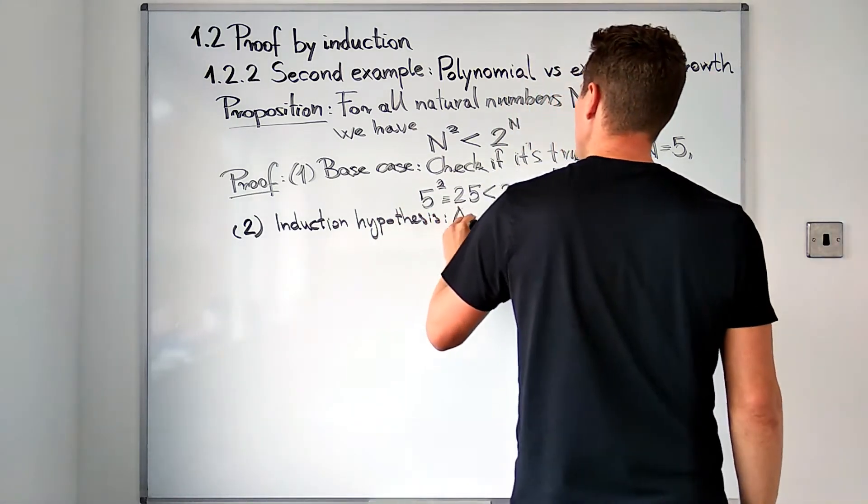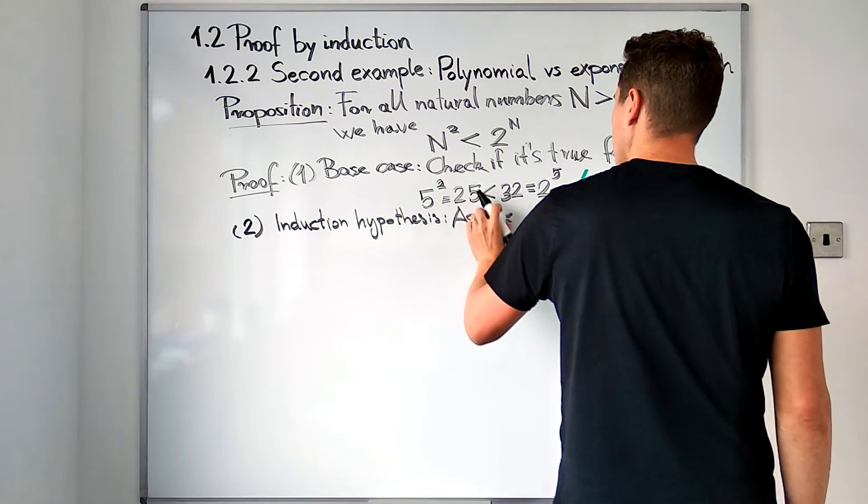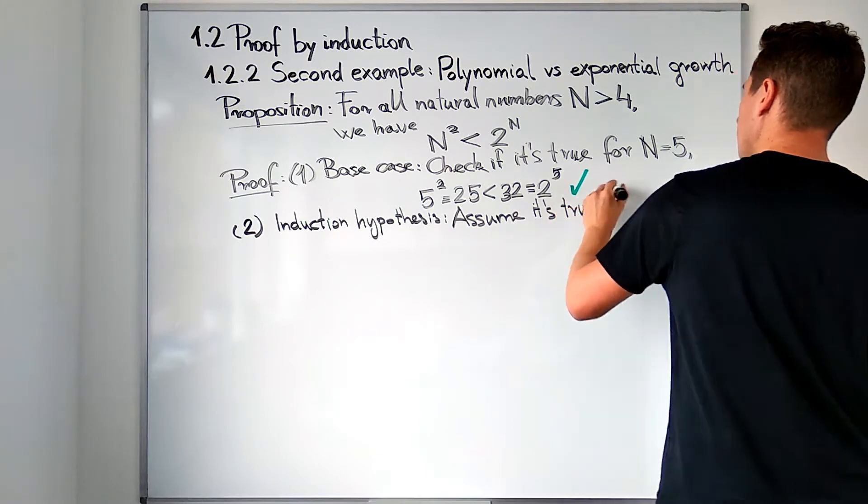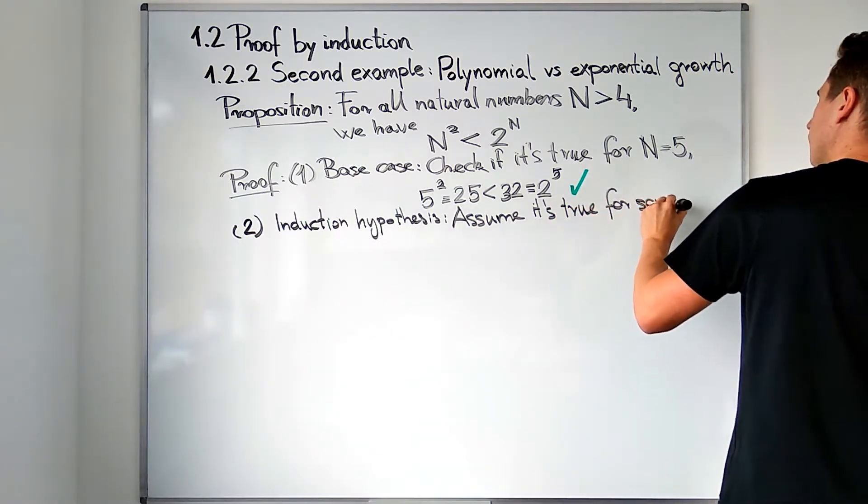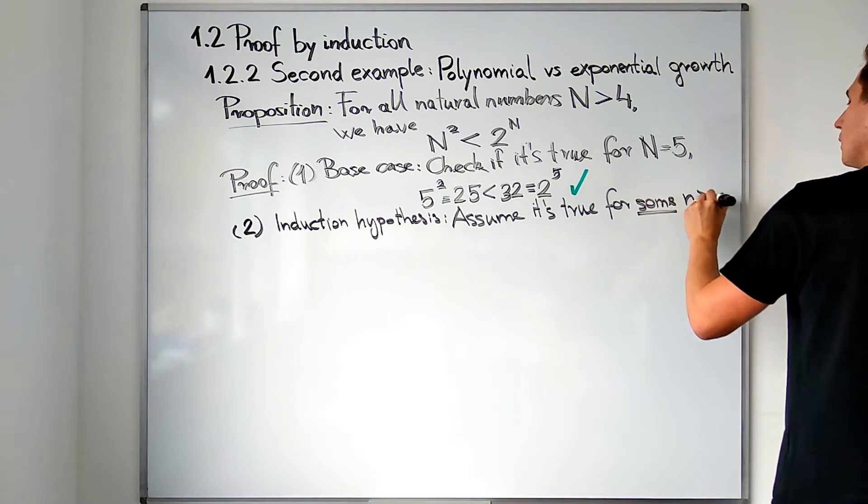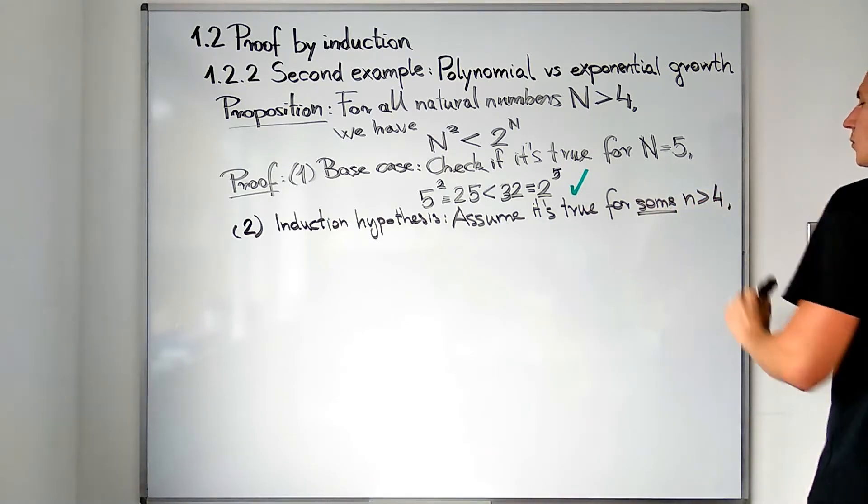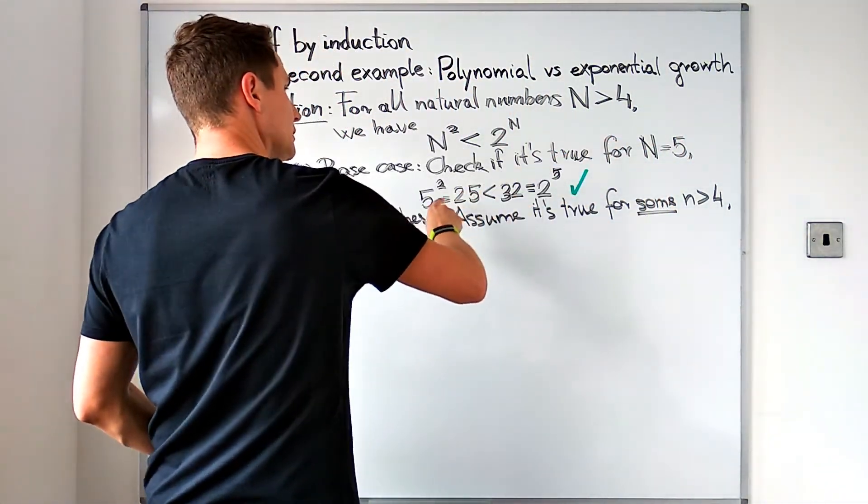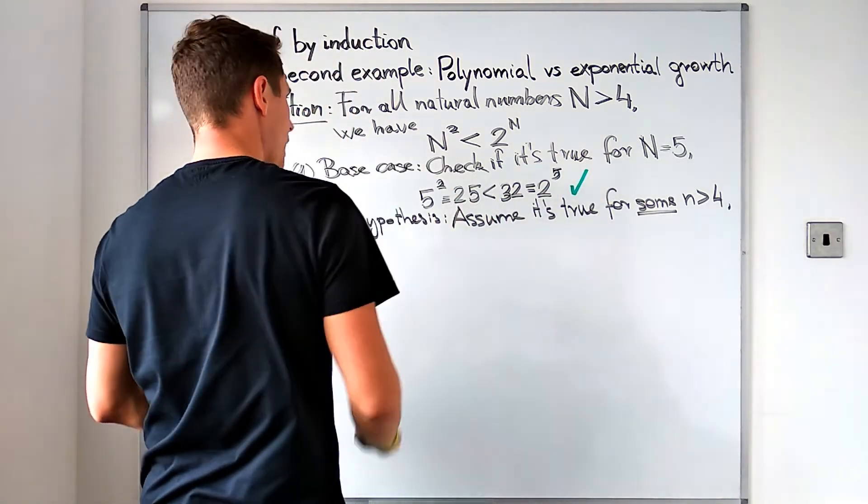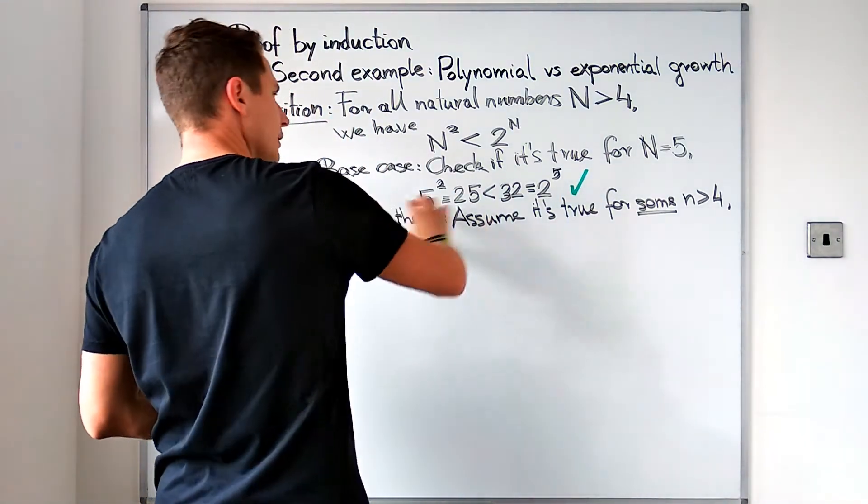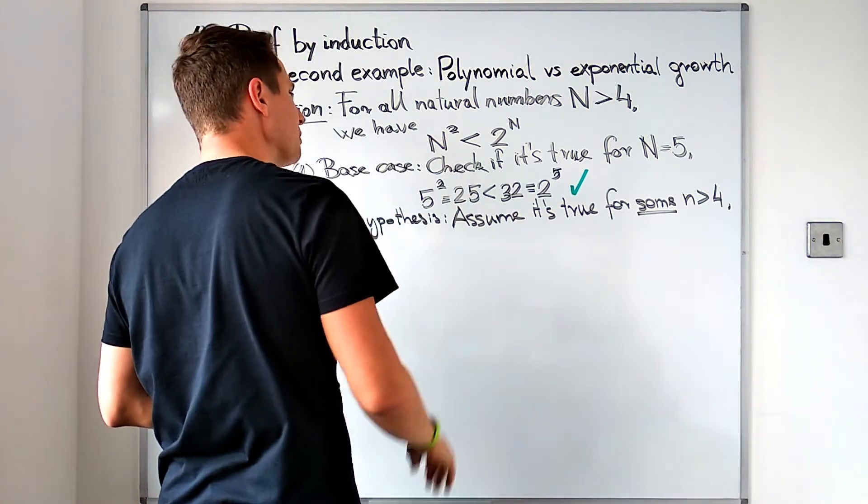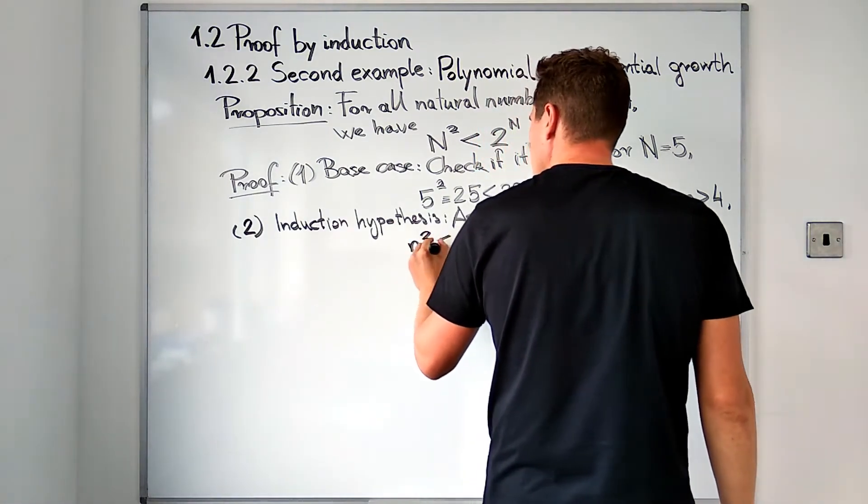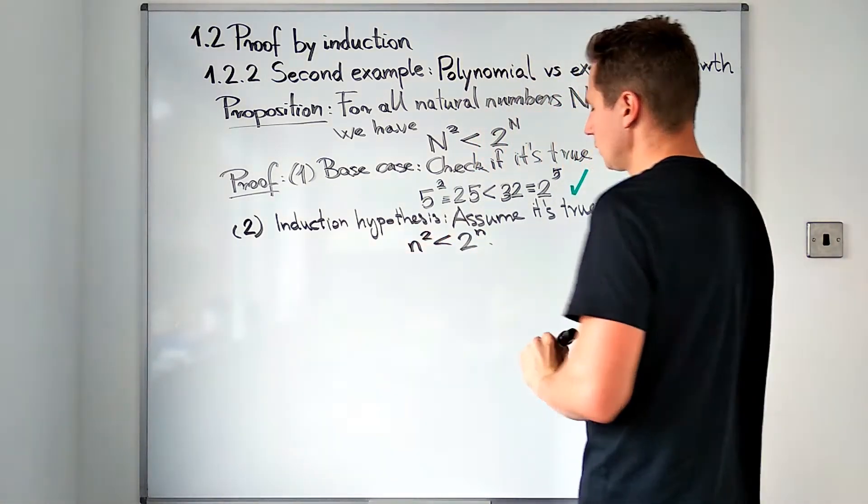We assume that the statement is true for some integer greater than 4. We have seen that there is at least one such number, 5, so establishing the base case is important so our assumption is not an empty assumption. Assuming this means that n squared is going to be strictly less than 2 to the nth power.